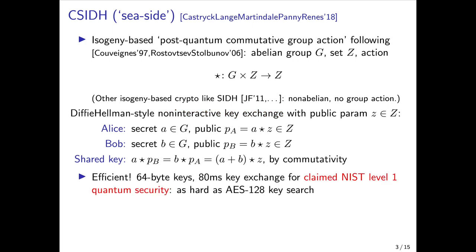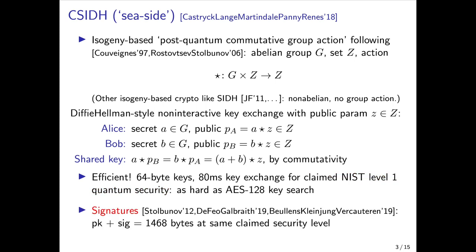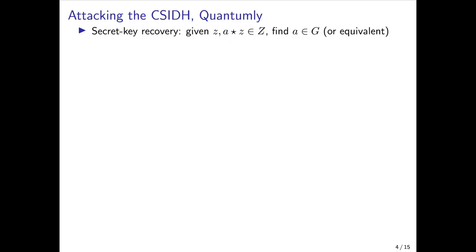The CSIDH proposal is very efficient. For example, the parameters targeting NIST level 1 quantum security allow us to have as small as 64 byte keys and an 80 millisecond key exchange. Subsequent work has developed signature schemes based on this commutative group action, which are quite compact. The public key and signature combined are below 1.5 kilobytes at the same targeted security level, which is much smaller than any signature scheme proposed to the NIST post-quantum process. So CSIDH has a very attractive efficiency profile, but what about its security, and specifically its post-quantum security?